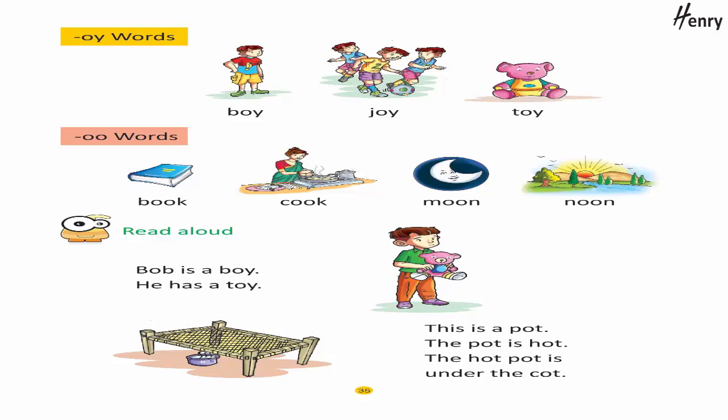Read aloud: Bob is a boy. He has a toy. This is a pot. The pot is hot. The hot pot is under the cot.